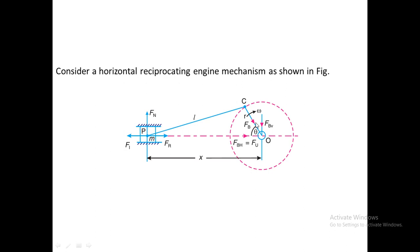This is a reciprocating engine mechanism in which OC is the crank, having angular velocity omega, rotating in the clockwise direction. There is a connecting rod CP having length L, and the crank has length r. The connecting rod connects to the piston P, which reciprocates in the guides. When the crank rotates, the piston reciprocates.